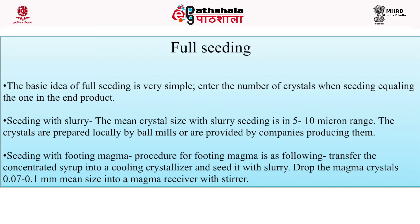In slurry seeding, the mean crystal size is in the 5 to 10 micron range. Crystals are prepared locally by ball mills or provided by specialized companies. When using a ball mill, grinding typically takes 4 to 6 hours. The first step is to calculate the number of crystals needed in the slurry by taking into account the product crystal size, the useful volume of the pan, and the target crystal content.